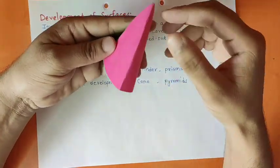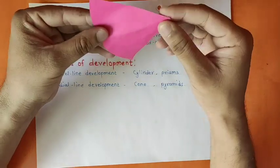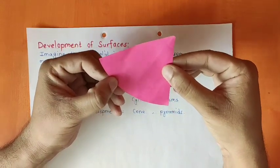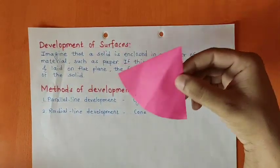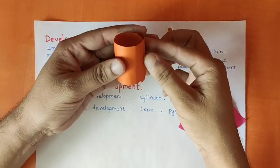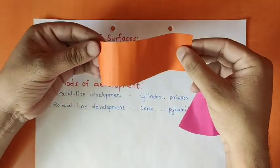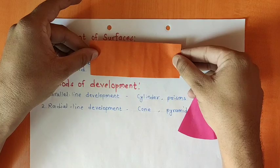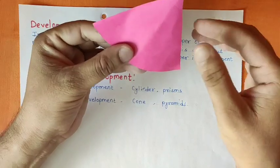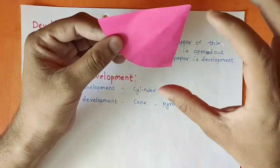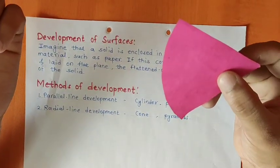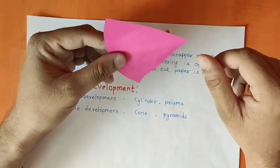In case of cone or pyramids, we take the true length and rotate that true length to get the development of surface. This kind of development is called radial line development. A paper wrapped around a cylinder or prism, opened and flattened out, gives parallel line development. A true length that is rotated to get the shape or size of paper that can be wrapped around the solids is called radial line development, observed in case of cone and pyramids.